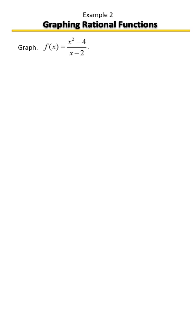So here we're going to graph this rational function. Step one would be to factor anything that can be factored from the top or the bottom. Notice that the top is a difference of terms.